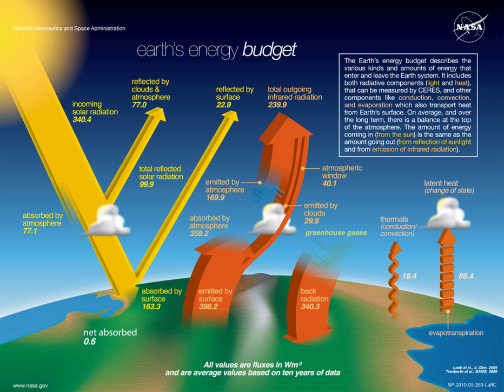Earth is very close to being in radiative equilibrium, the situation where the incoming solar energy is balanced by an equal flow of heat to space. Under that condition, global temperatures will be relatively stable. Globally, over the course of the year, the Earth system—land surfaces, oceans, and atmosphere—absorbs and then radiates back to space an average of about 240 watts of solar power per square meter.